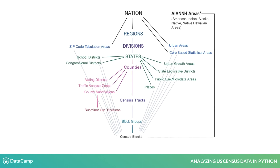These geographies exist in a hierarchy, with larger units built from smaller units. Census blocks are the smallest reporting unit and the building block for all other geographies. In this image, the connecting lines indicate nesting, so blocks nest in block groups, which nest in census tracts, which nest in counties.